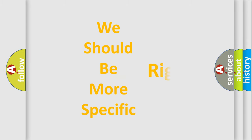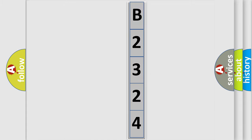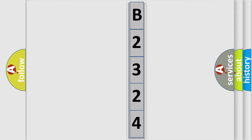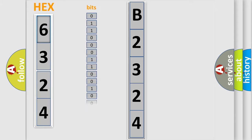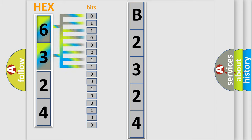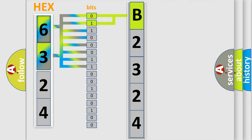The following demonstration will help you look into the world of software for car control units. The error code is split into two bytes consisting of 16 bits. One bit is the basic unit that each computer works with. The bit has two logical states: zero, low level, and one, high level. By combining the first two bits, the basic character of the error code is expressed.